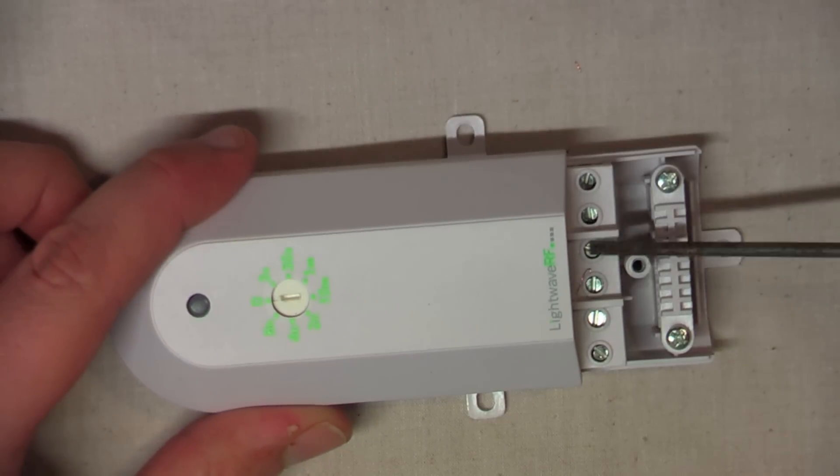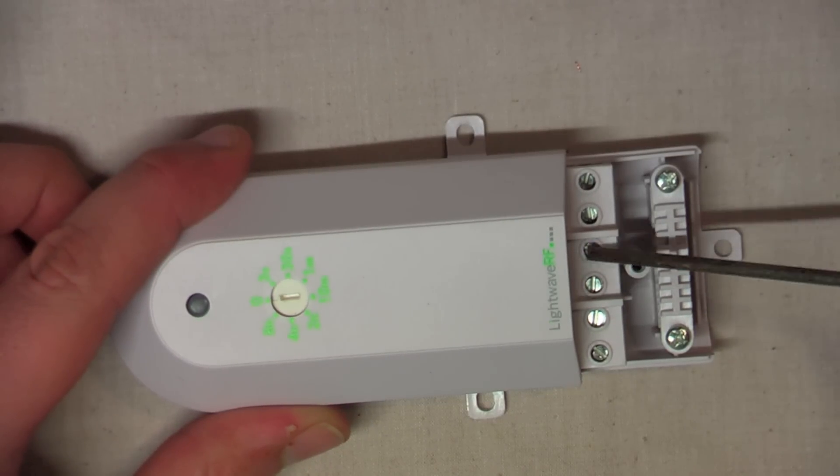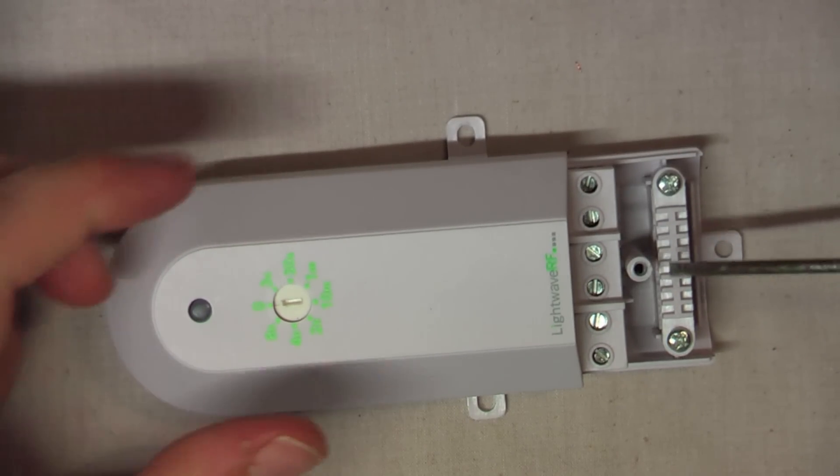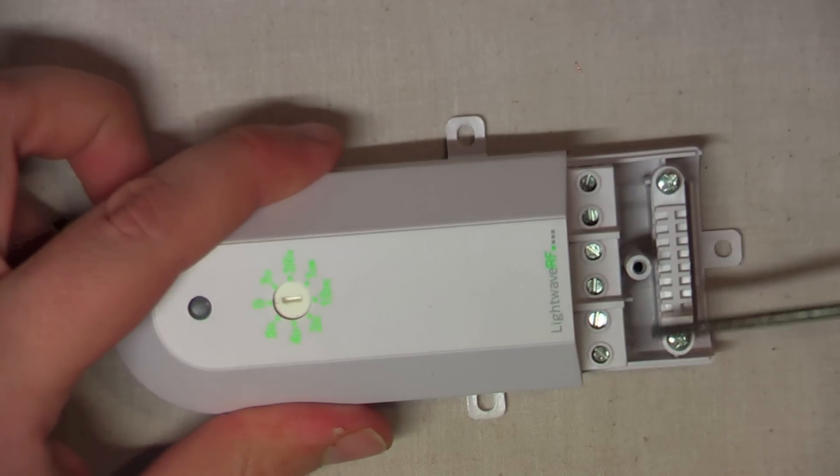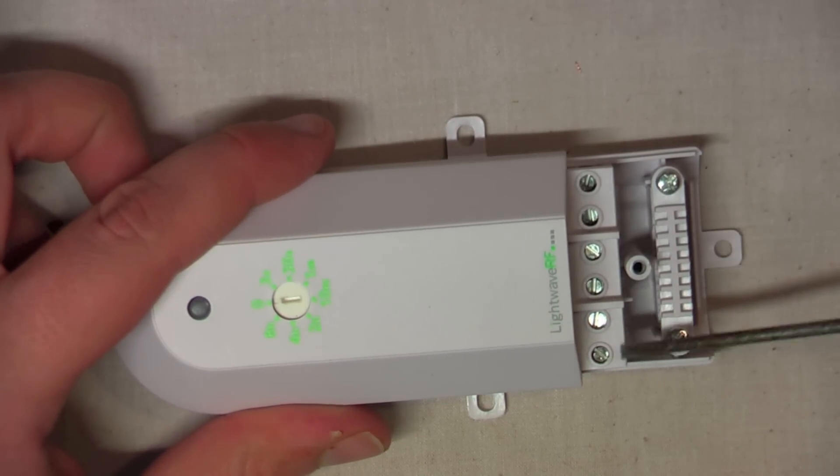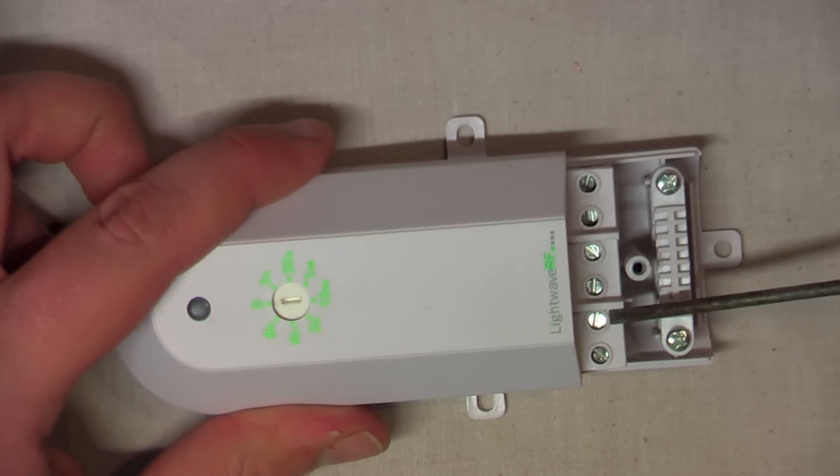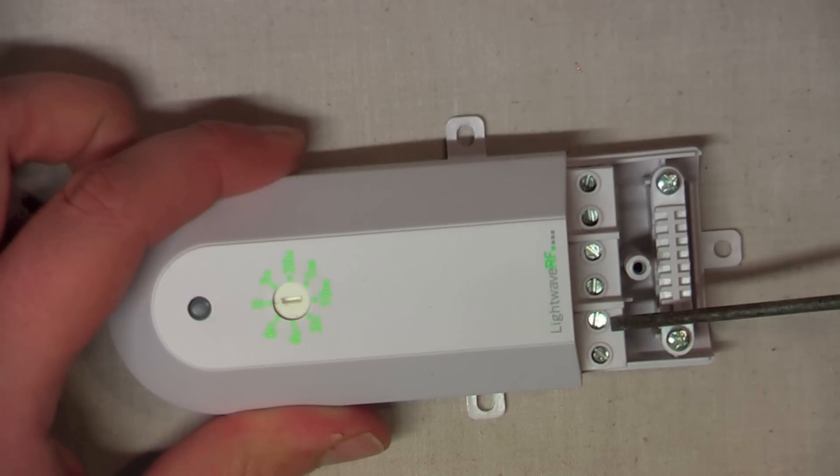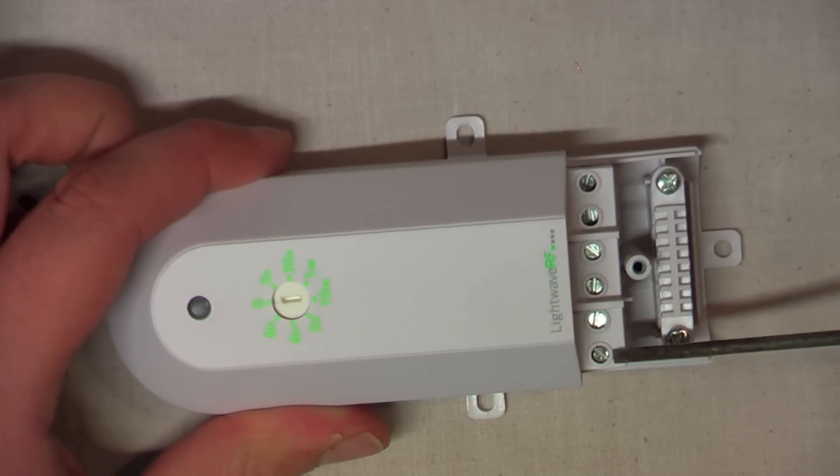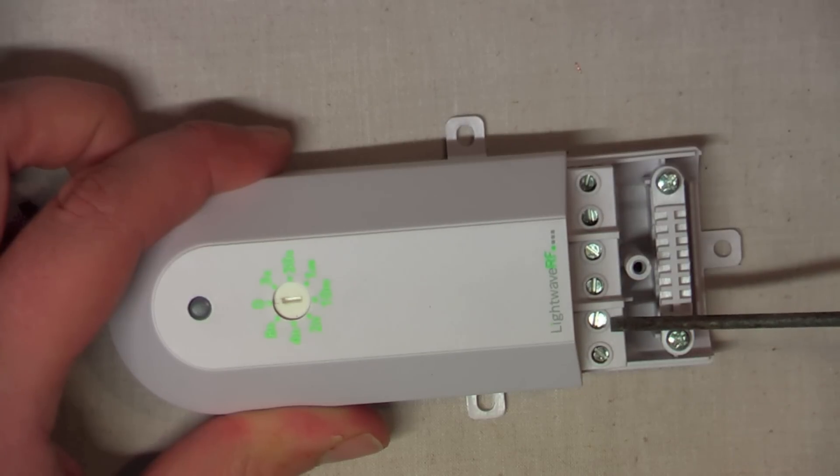Now this relay, unlike the previous generation LightWave RF relay, outputs 240V on its load terminals here, and it's only a single pole relay. So this isn't going to work if you want to use it for lifting or lowering screens, blinds, garage doors, that sort of thing.